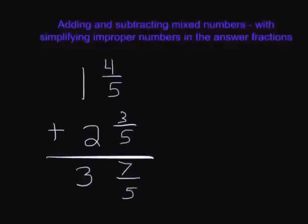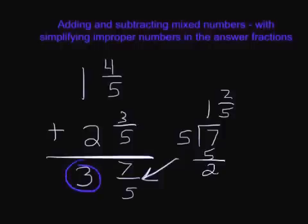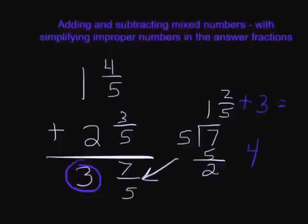The way we're going to do that is we are going to turn it into a mixed number. I'm going to go 7 divided by 5. 5 goes into 7 one time. One times 5 is 5, I get 2 left. So that means I have 1 and 2 fifths. And then I'm going to take this whole number over here and add it to the mixed number that I got. So I'm going to go 1 plus 3 is 4, and then I add on my fractional amount which is 2 fifths. So my answer would be 4 and 2 fifths.